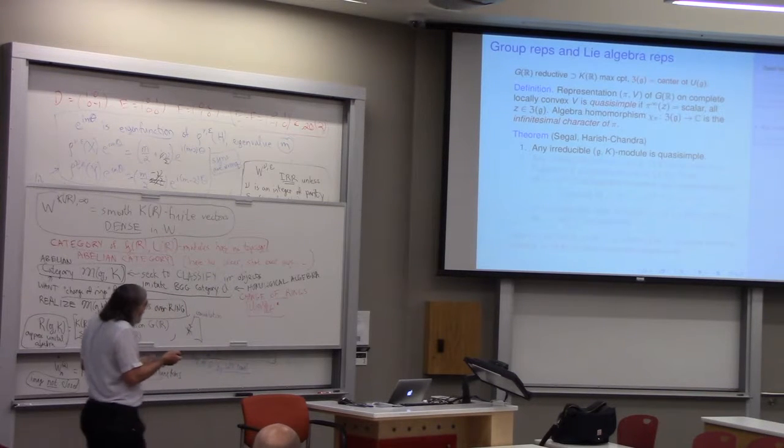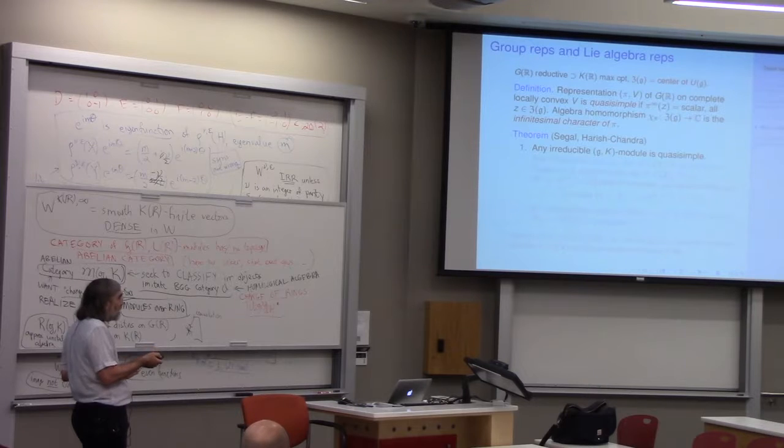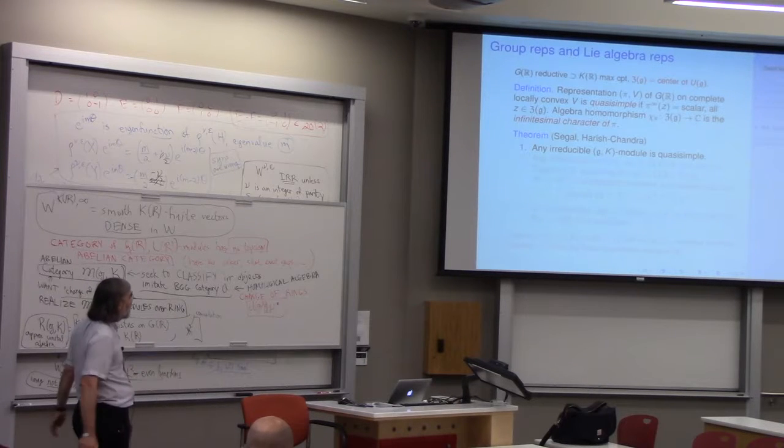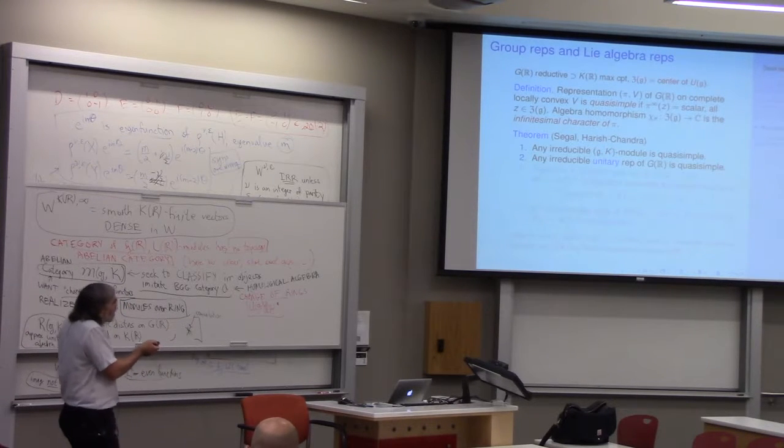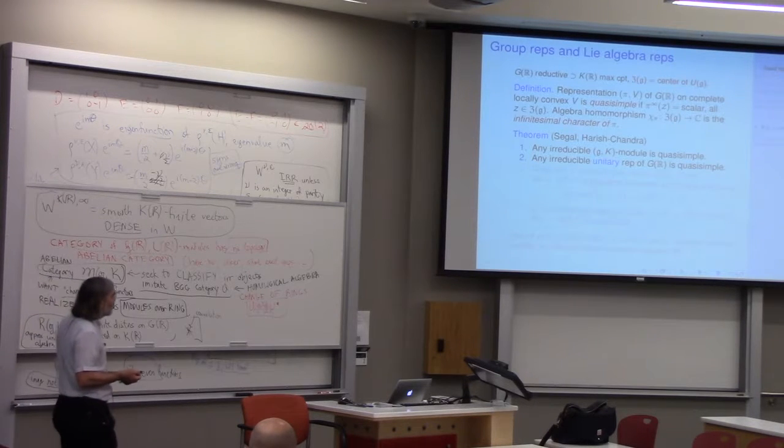The statement is, if you have an irreducible GK module, it's automatically quasi-simple. A unitary group representation is automatically quasi-simple.